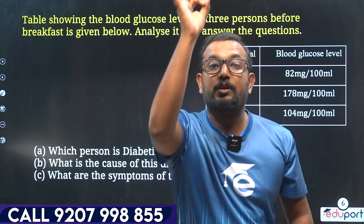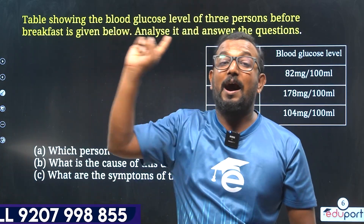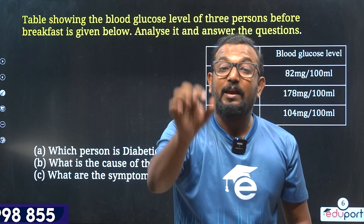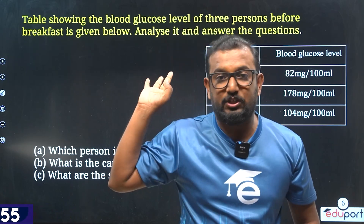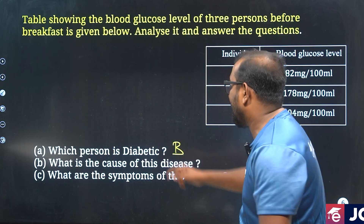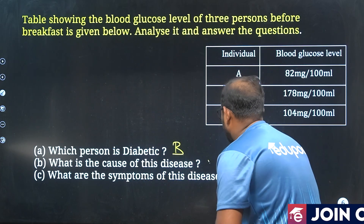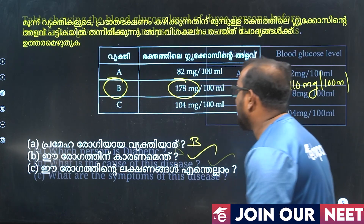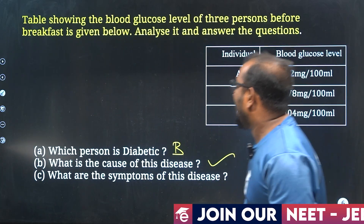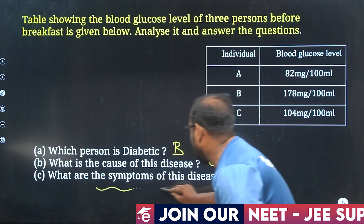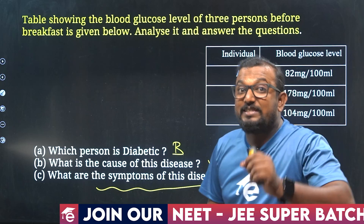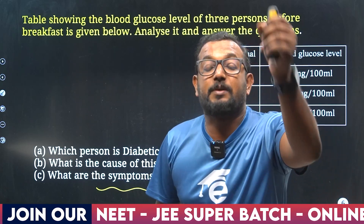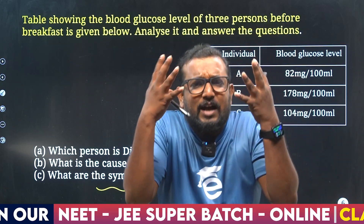In our body, insulin is produced by the beta cells. The answer is the second answer. What are the symptoms of this disease?